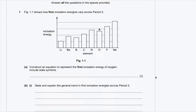Question number 1. Figure 1.1 shows how first ionization energies vary across period 2. Part A: construct an equation to represent the first ionization energy of oxygen, including state symbols.